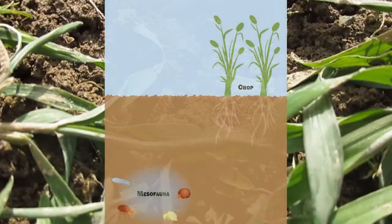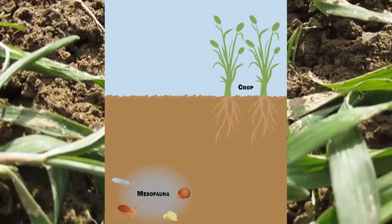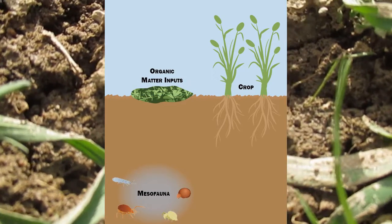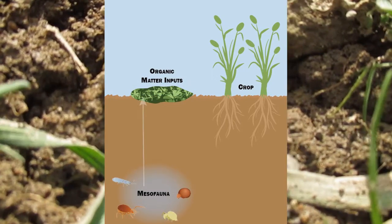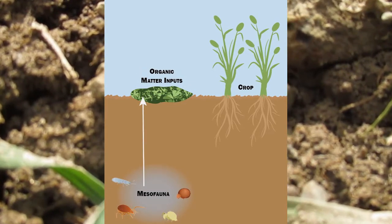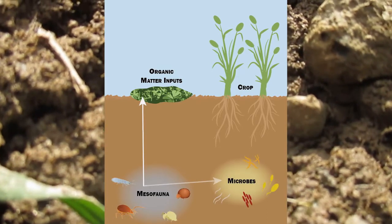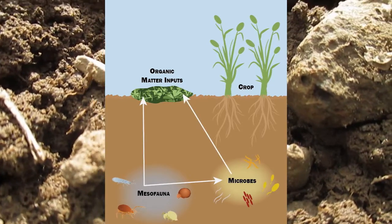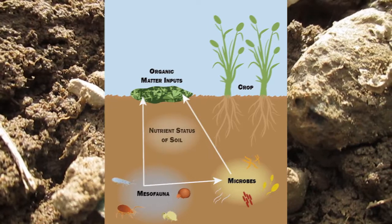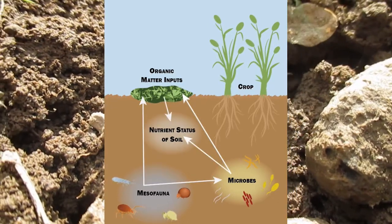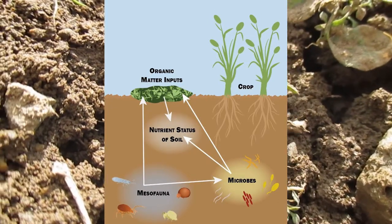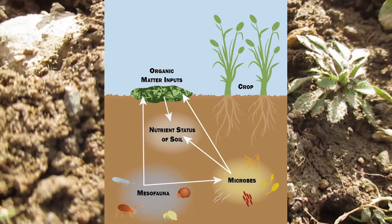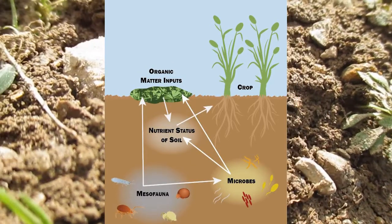At the same time, soil mesofauna can improve soil health by stimulating organic matter decomposition and nutrient cycling, by directly consuming organic matter pieces, or by grazing on soil microbes that govern these processes, which ends up improving soil nutrient status. By improving soil nutrient status and other aspects of soil health, soil mesofauna can help support crop production.